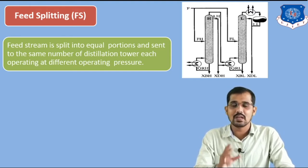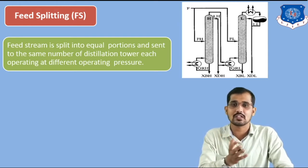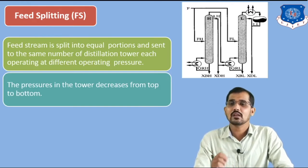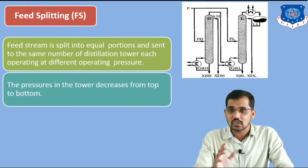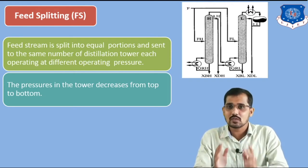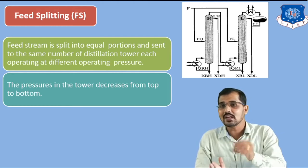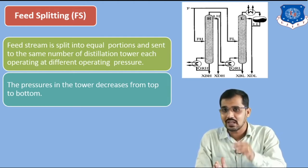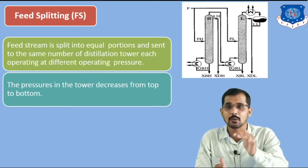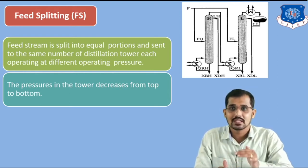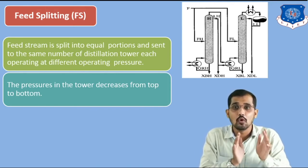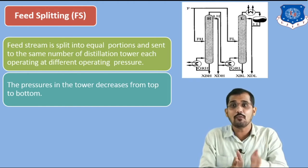In this figure, the first distillation column is operating at higher pressure and the second at lower pressure. The pressure is decreasing from the top section to the bottom section within each column as well. Similarly, distillation column 2 is operating at lower pressure compared to the first distillation column.